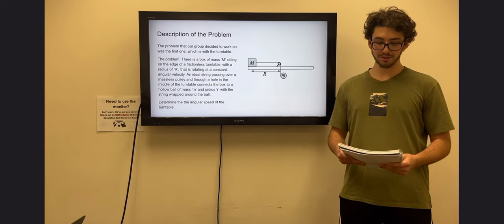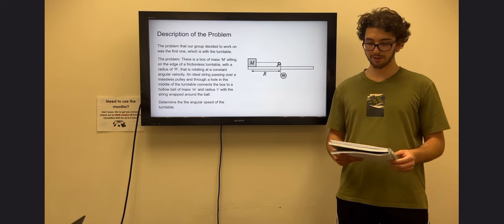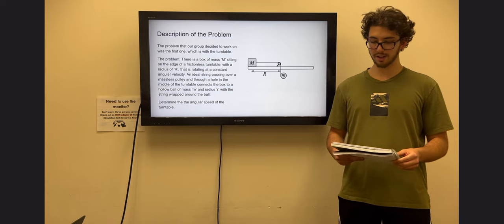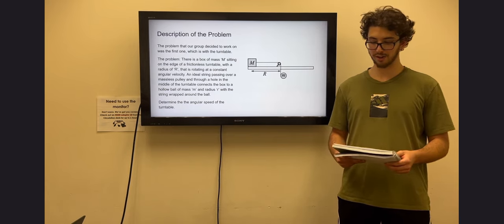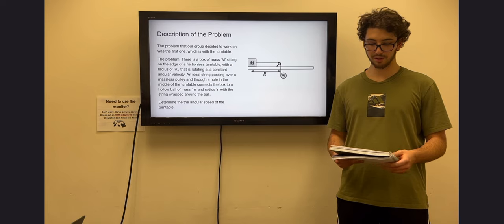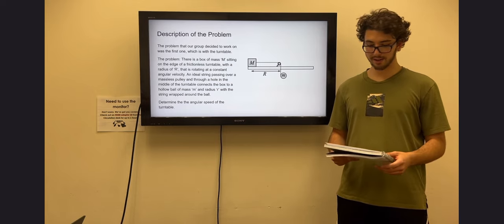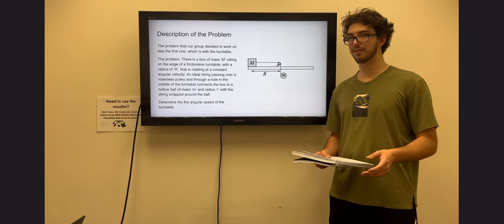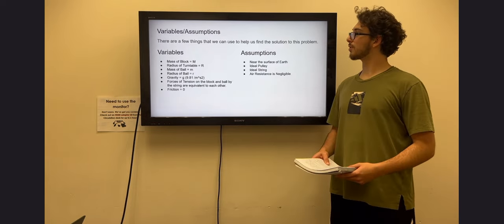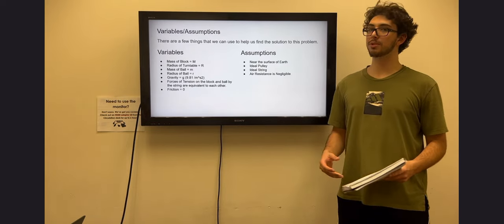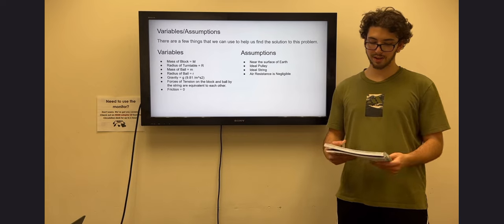An ideal string passing over a massless pulley and through a hole in the middle of the turntable connects the box to a hollow ball of mass M and radius R, with the string wrapped around the ball. What we need to figure out is the angular speed of the turntable.